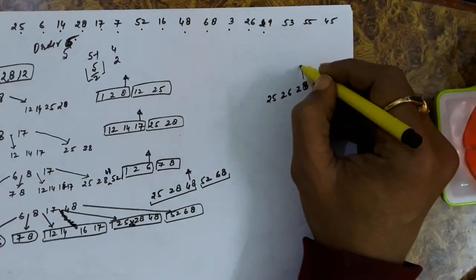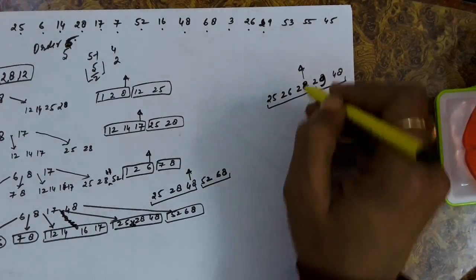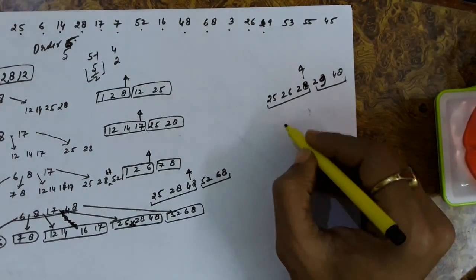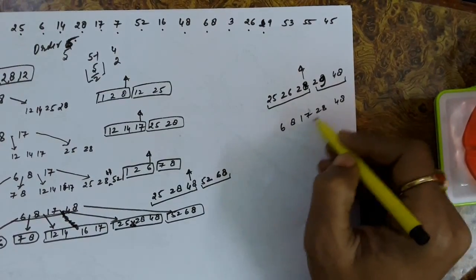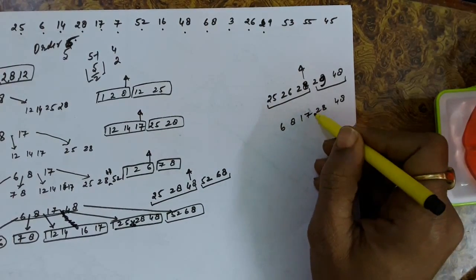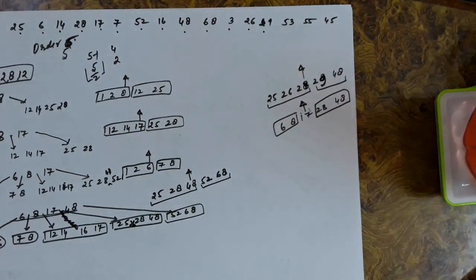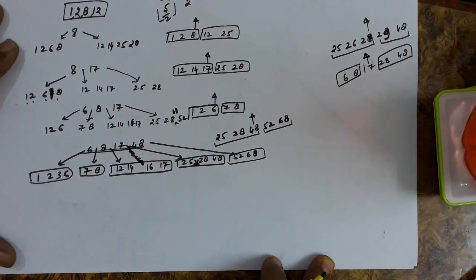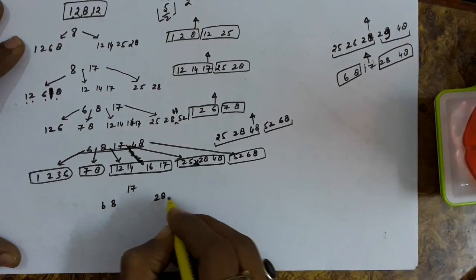Key 28 will go upwards. However, sending 28 upward means the root node will also contain more than the maximum keys (6, 8, 17, 28, and 48), so the root is also headed for splitting. Since we are splitting an internal node, we do not retain the median key at the bottom. Key 17 will be sent upwards as the new root, with 6 and 8 forming one child node and 28 and 48 forming another child node.